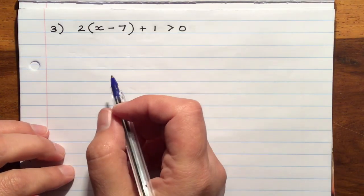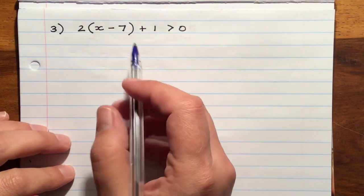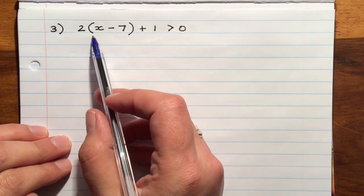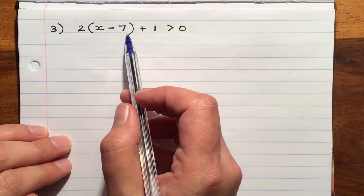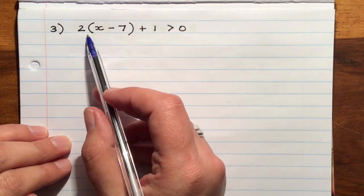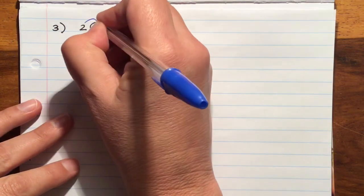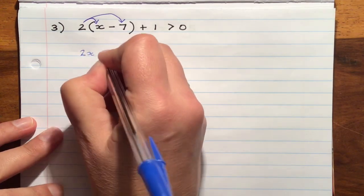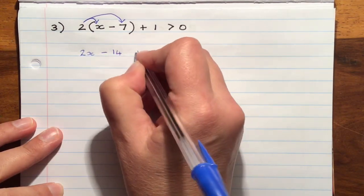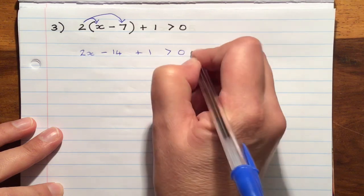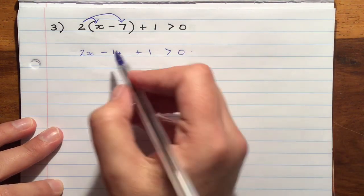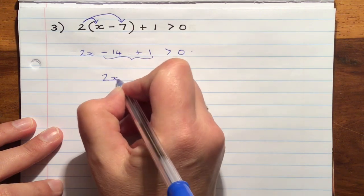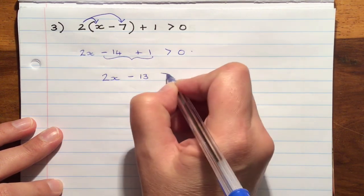Number 3, 2 open brackets x minus 7 close brackets plus 1 is greater than 0. Every time you see brackets in either an equation or an inequality, we have to first distribute to get rid of the brackets. So we're going to get 2x minus 14 plus 1 is greater than 0. And to make it easier, I would first collect the like terms and say that 2x minus 13 is greater than 0.